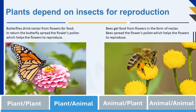Bees and flowers are like good friends in nature. Bees need nectar, which is like sweet juice to them, and flowers make this sweet nectar. When a bee goes to a flower to get nectar, it accidentally picks up some pollen, which is like tiny dust. When the bee visits another flower, some of that pollen rubs off onto the new flower, which helps it make seeds. The flowers provide sweet nectar for the bees, and in return, the bees help the flowers make new seeds so they can grow into more flowers.